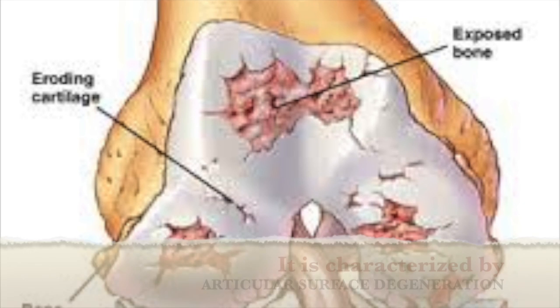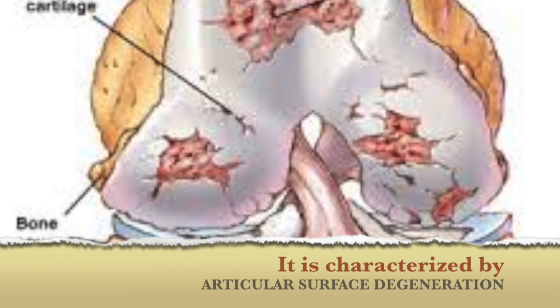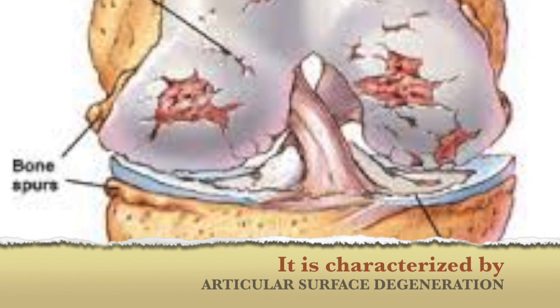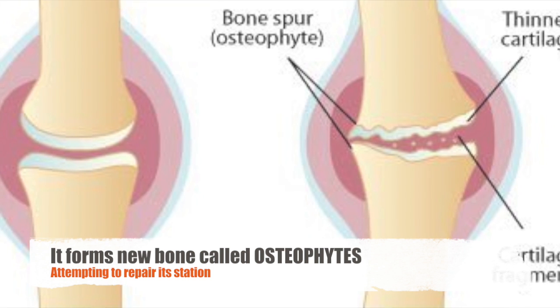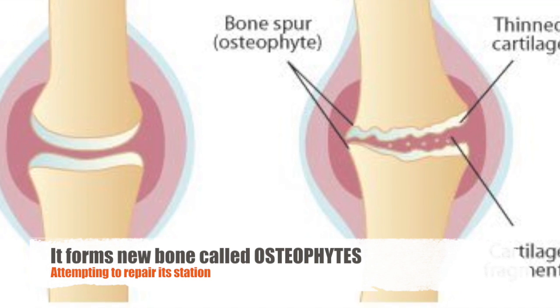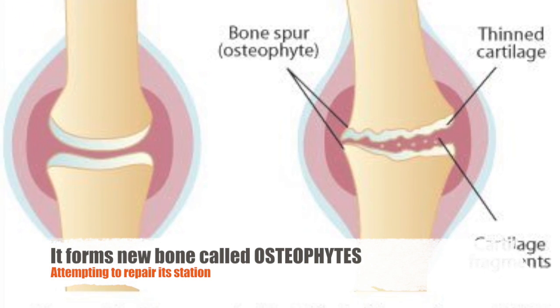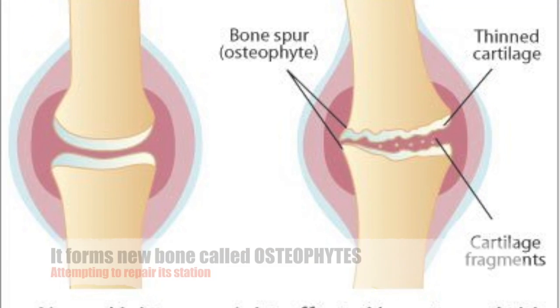Osteoarthritis is a disorder of synovial joints affecting our nation. It is characterized by articular surface degeneration. It forms new bone called osteophytes, attempting to repair its station, and it involves secondary inflammation.